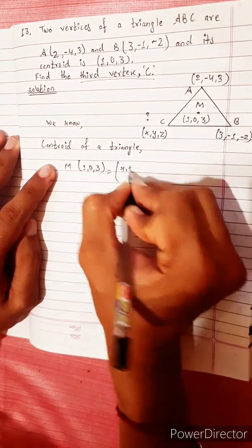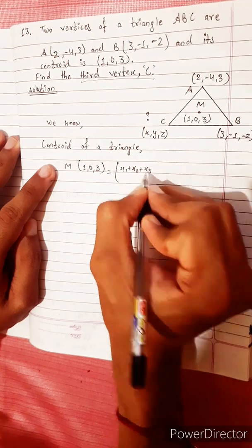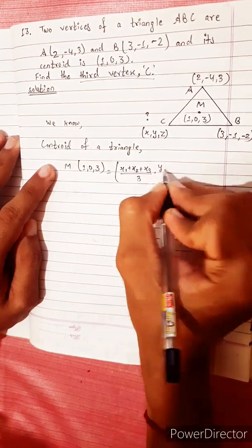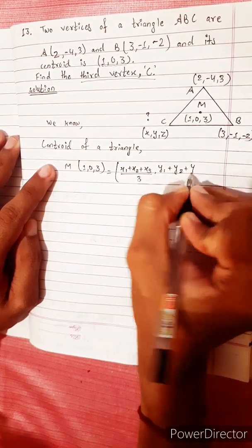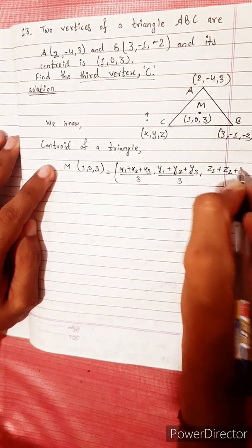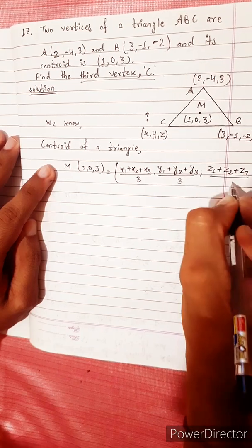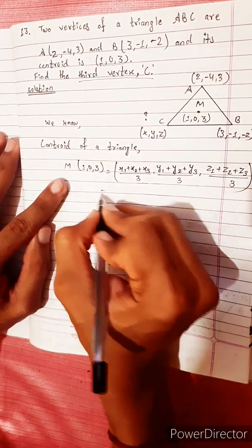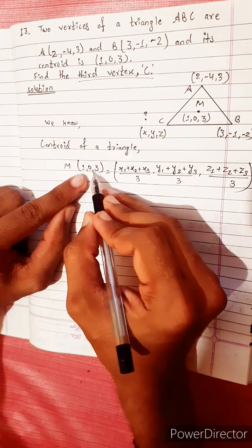The formula is (X1 plus X2 plus X3) divided by 3, (Y1 plus Y2 plus Y3) divided by 3, (Z1 plus Z2 plus Z3) divided by 3, which equals (1, 0, 3).